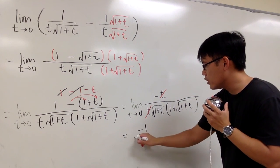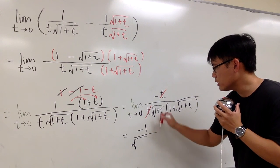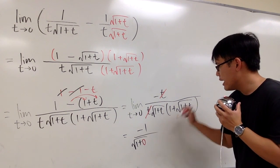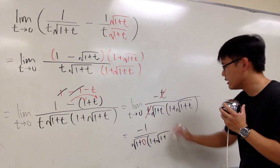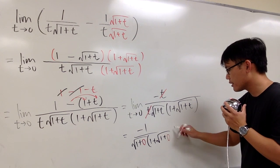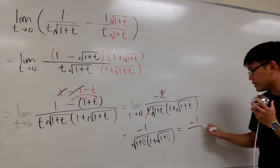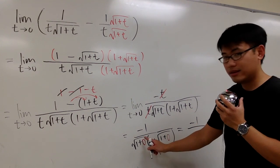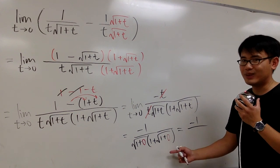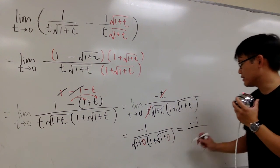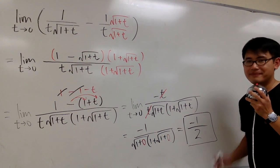Now we can plug 0 into all the remaining t's. On the top we have negative 1. On the bottom, we have the square root of 1 plus 0, which is 1, times 1 plus the square root of 1 plus 0, which is 1 plus 1 equals 2. So the denominator is 1 times 2, which is 2. Altogether, the answer is negative 1 half.